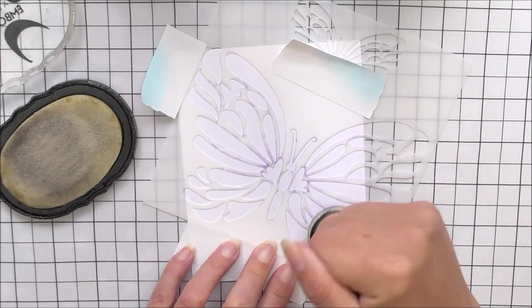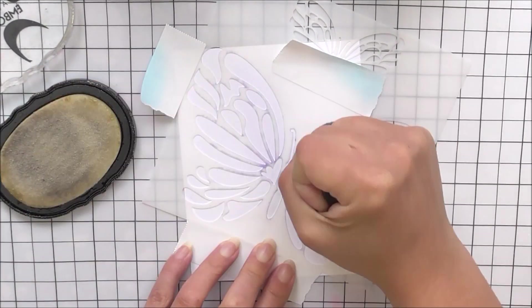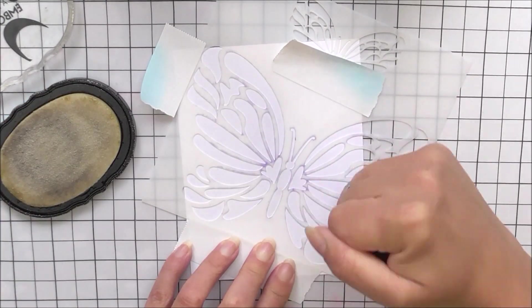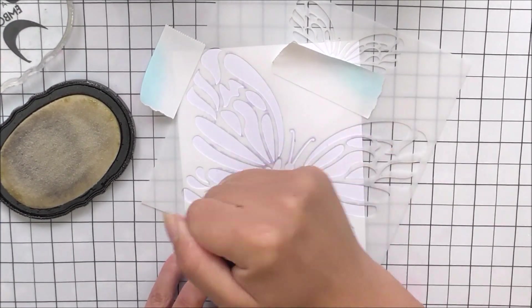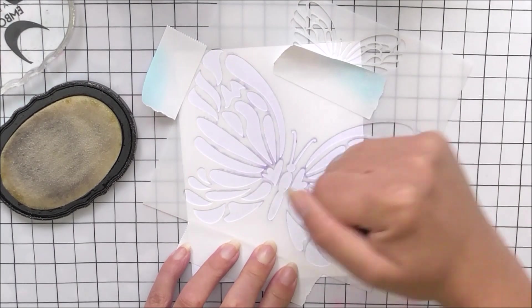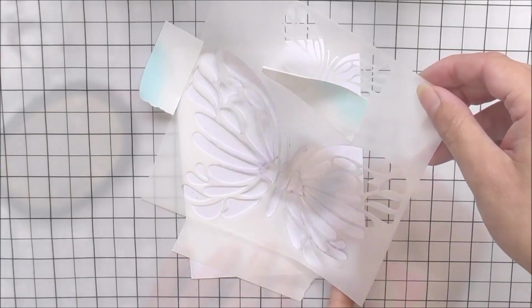It might add too much ink and go under the stencil, so I do find that adding it this way with the little dauber or blending tool works really, really well.